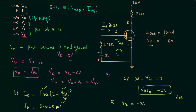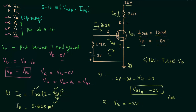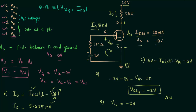Now we solve part C to find the output voltage VDS, the voltage between drain and source. Applying Kirchhoff's voltage law in the output loop starting from 16 volts: 16 volts minus ID times 2 kilohms minus VDS equals zero. Substituting the drain current gives VDS equal to 4.75 volts.